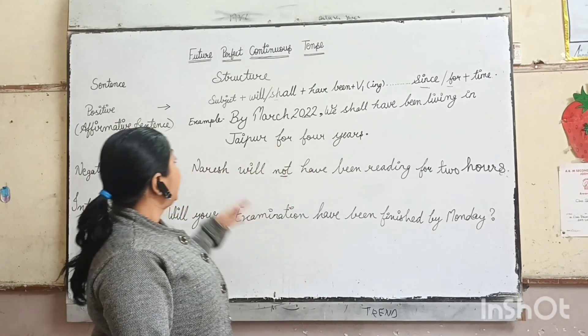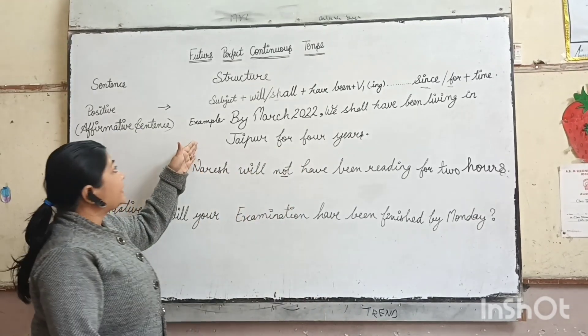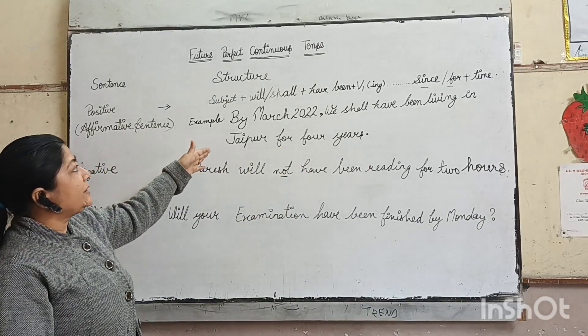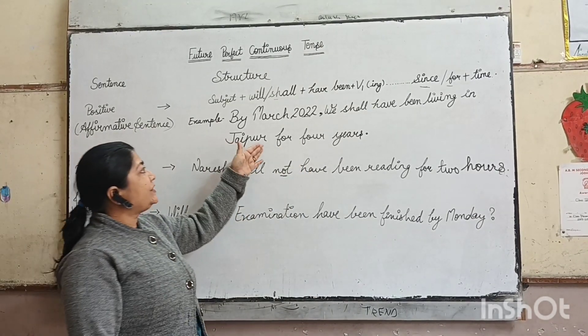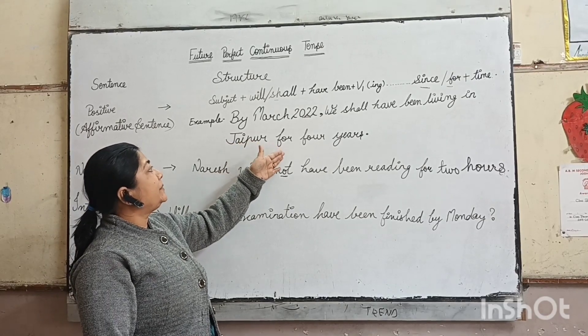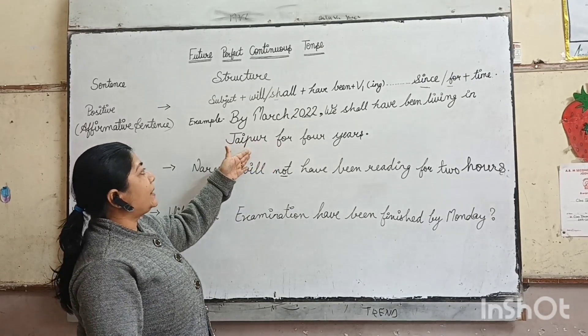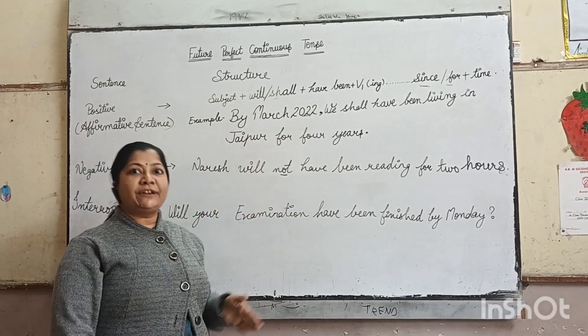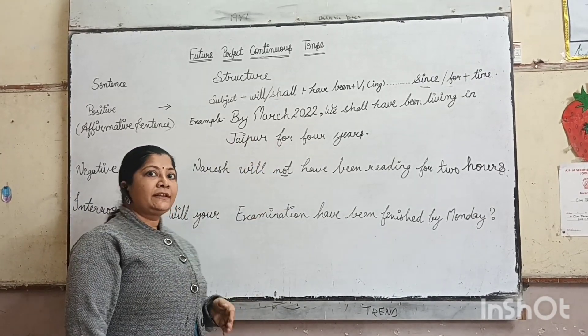Clear? Example: By March 2022, we shall have been living in Jaipur for 4 years. Clear?